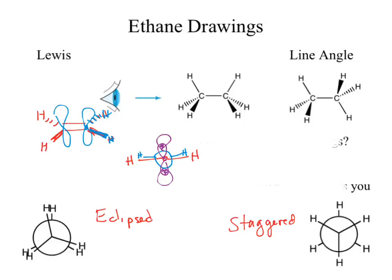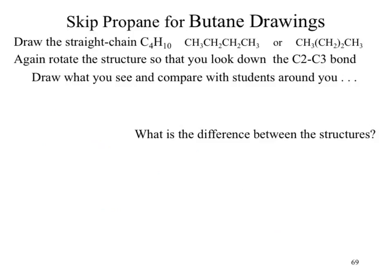For sigma bonds, we don't need to worry about that because we always have orbital overlap with a sigma bond regardless of the rotation. Skipping to butane — C4H10 — we could draw it out. What I'm going to ask you to do is show me the Newman projection looking down the carbon 2-3 bond, so the 2-3 bond should disappear from view.